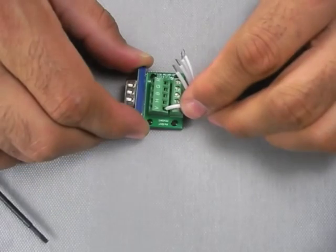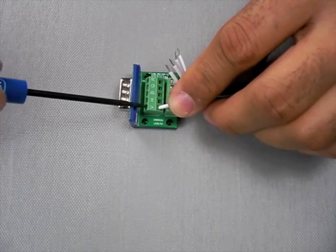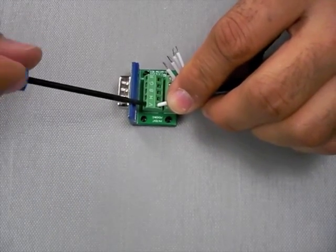Now insert the first center conductor and make sure there is no wire exposed. Then tighten the screw completely.